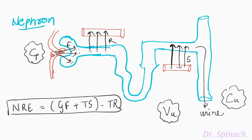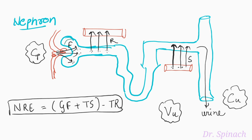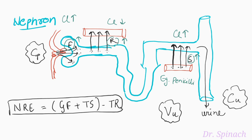Now let's look at different things that can happen to the drug in the nephron. If filtration is increased, clearance will increase. If reabsorption is increased, the drug goes back into the blood vessel and clearance decreases. If a drug has a property of getting reabsorbed more, it will have less clearance; if a drug has a property of getting secreted more, it will have more clearance. An example of a drug that is secreted more is penicillin.